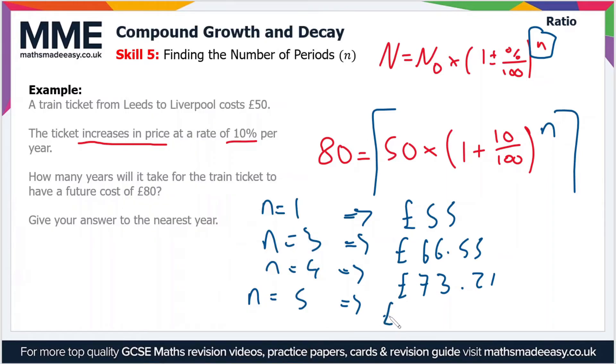So if we plug in 5 to the power, okay, so we've got a cost of £80.53 here. So £80.53, now that's greater than £80.